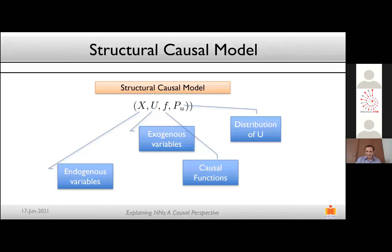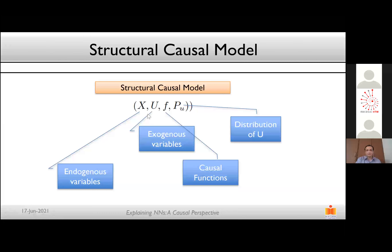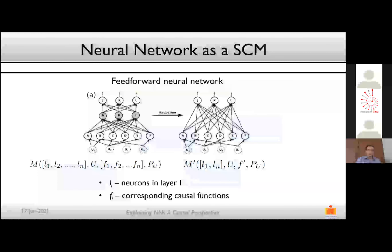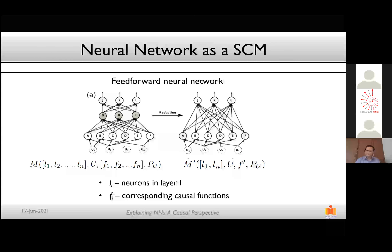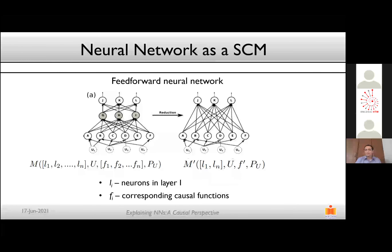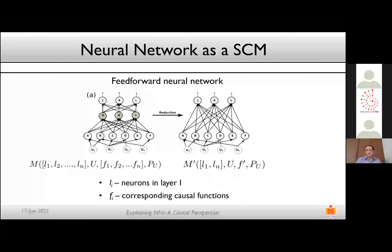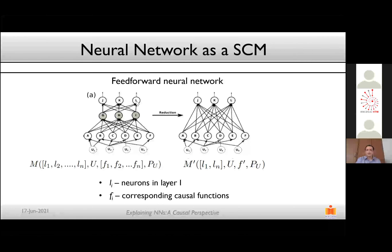The premise of causal inference is to assume a structural causal model (SCM), which shows relationships between variables and the functions relating how one variable generates data for another. An SCM consists of endogenous variables X, exogenous variables U, causal functions F, and a distribution over U. Importantly, data in the real world is generated by an SCM, but we don't have access to that — so in this work we focus on the SCM that the neural network itself has learned during training.